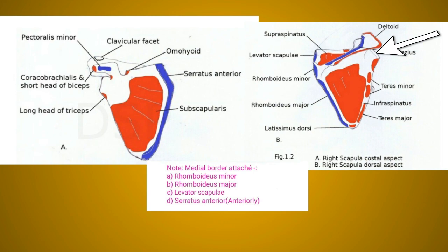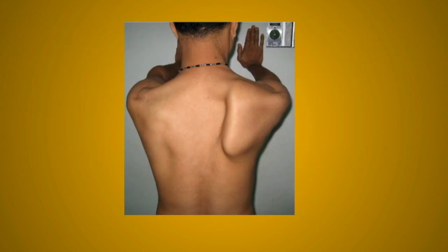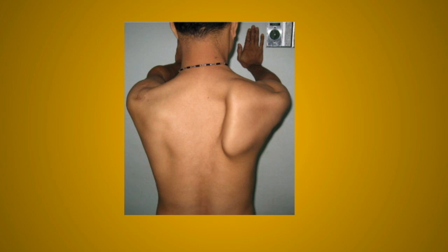Regarding the applied aspects of the scapula: paralysis of the serratus anterior muscle causes winging of the scapula, as seen in the diagram. The medial border of the scapula becomes unduly prominent and the arm cannot be abducted beyond 90 degrees, because overhead abduction requires both the serratus anterior and trapezius muscles. Also, scaphoid scapula is a developmental anomaly in which the medial border is concave. This was all about the scapula bone — thank you so much.